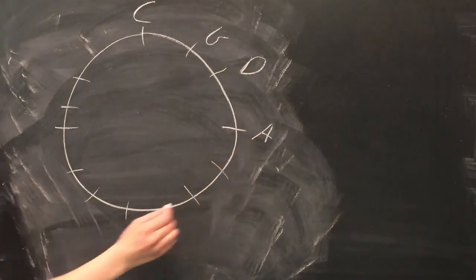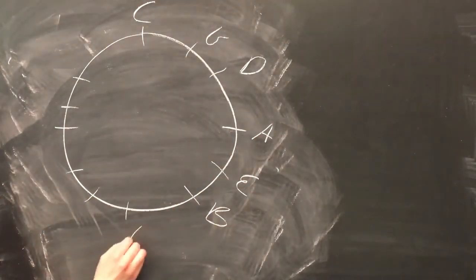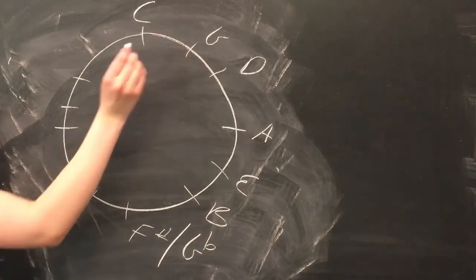First to G, then D, A, and so on and so forth. We fill in the entire circle like this. Then we can work on the key signatures.